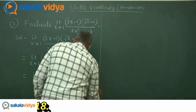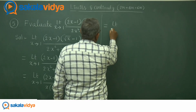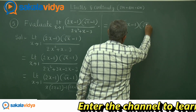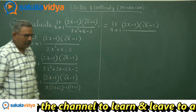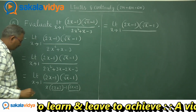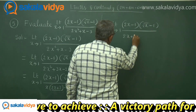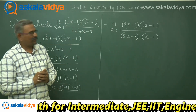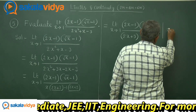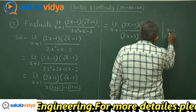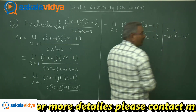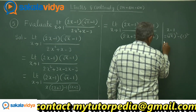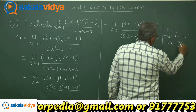Now limit x tends to 1 of (2x minus 1)(√x minus 1) upon (2x plus 3)(x minus 1). Again we need to factorize x minus 1. This x minus 1 can be written as (√x)² minus 1², which is in the form of a² minus b², whose factors are (a plus b)(a minus b). So this factorizes to (√x plus 1)(√x minus 1).